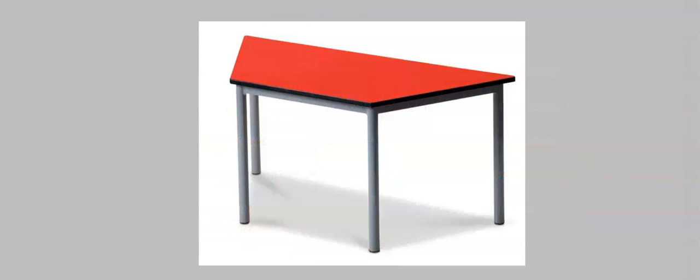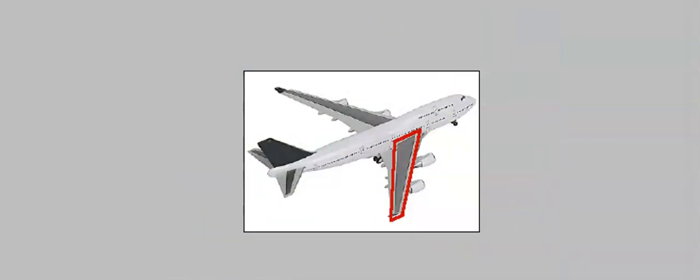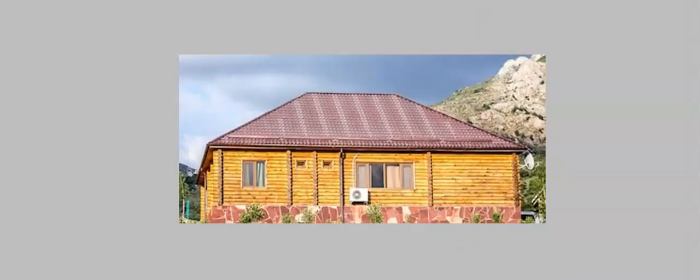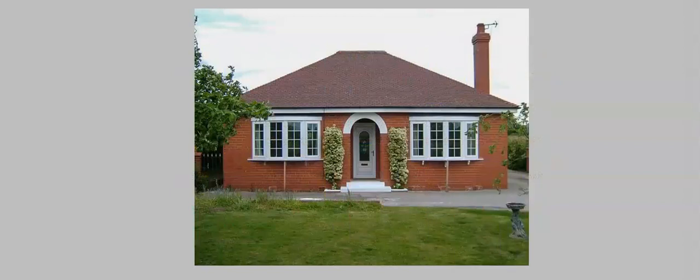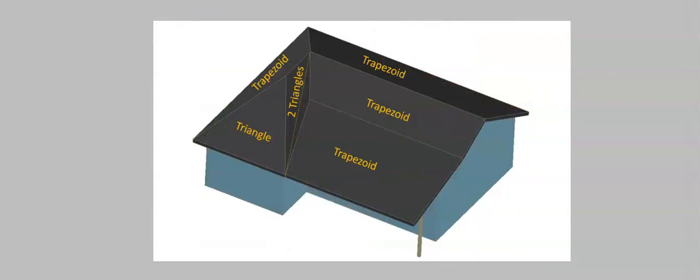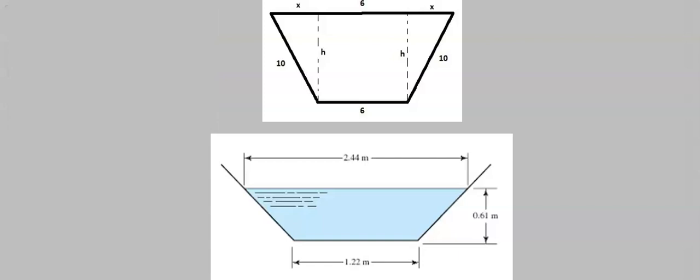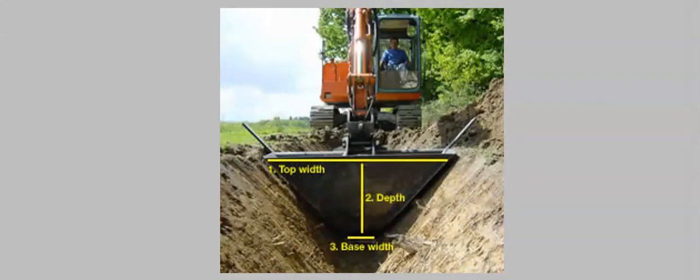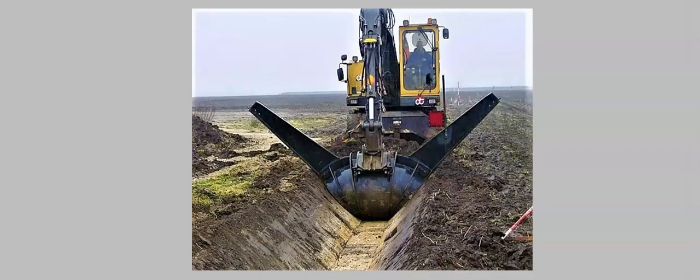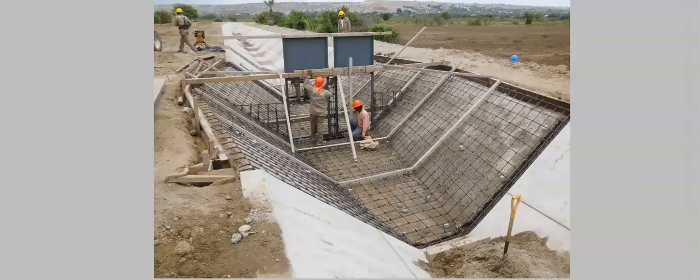In real life, trapezoidal shapes can be evident around us, like the shape of a table, some shapes on a bicycle, on windows, some doors and entrances, bridges, even on the wings of an airplane. The roofs of many houses are trapezoidal, combined with triangles. In construction, open channels allow stormwater to be conveyed and discharged to prevent flood.